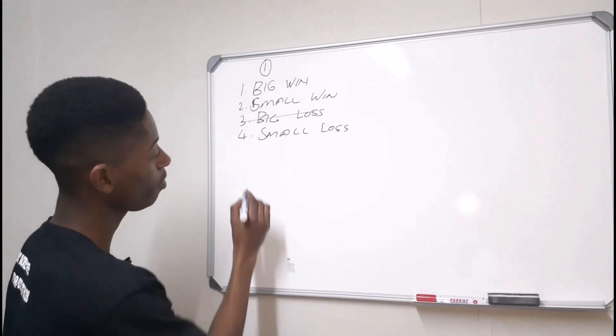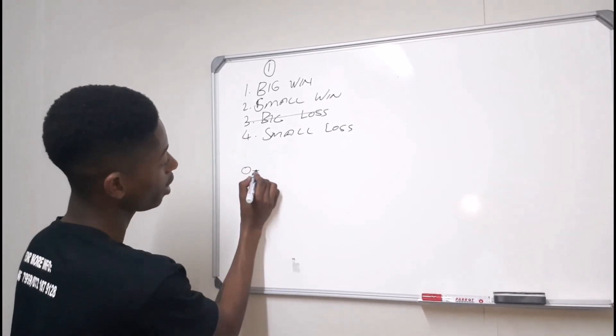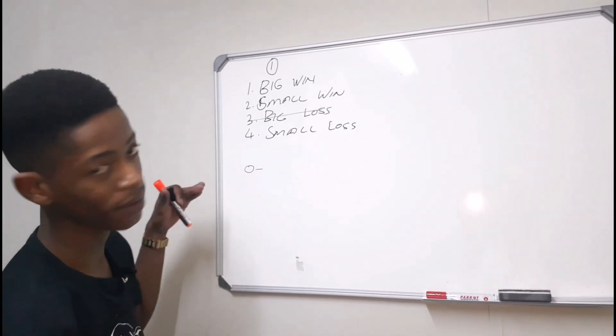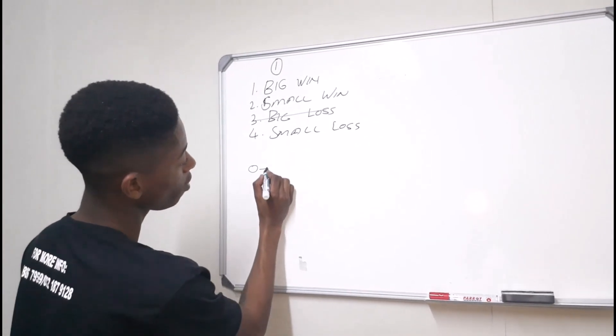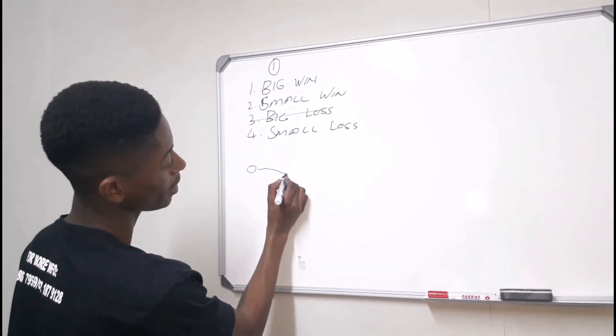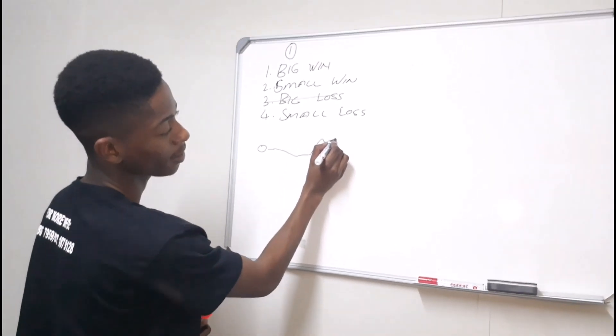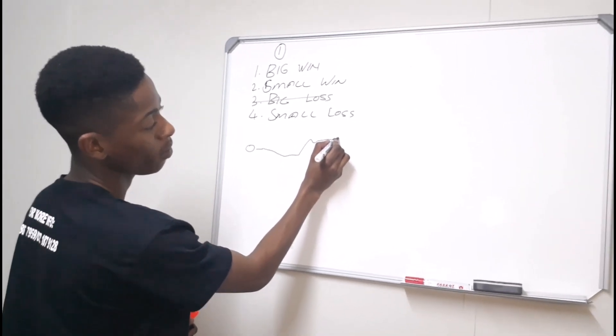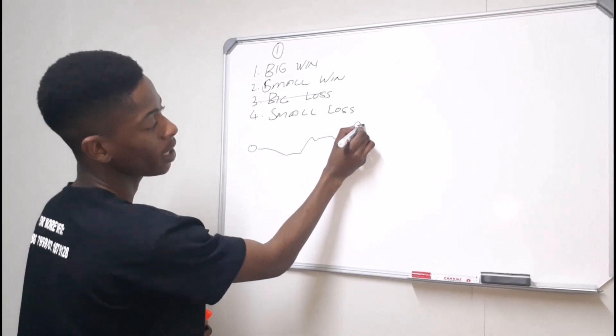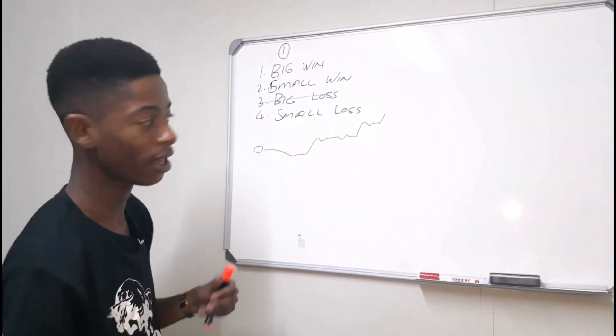So what it simply helps you with is that it helps your equity. Let's say you start off first with zero dollars. Your equity curve is going to start moving like, if you keep on experiencing loss, it's going to be going like this and just small wins like this and a big win. It will keep on going like small wins, small losses, small wins, small losses and a big win and small wins, small loss.